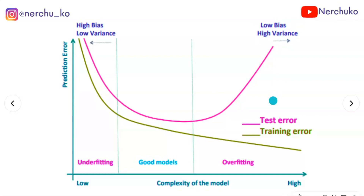Let's recap. Underfitting is the high bias, high variance case — the model is not well trained. A generalized model is low bias and low variance — well trained on data. Overfitting is the low bias, high variance case — the model is overtrained on training data but fails on new data.